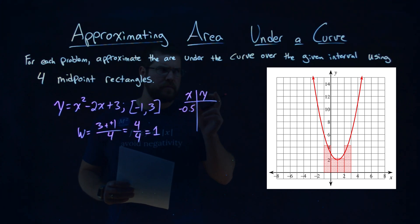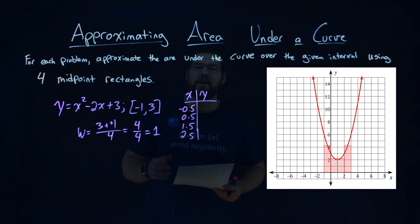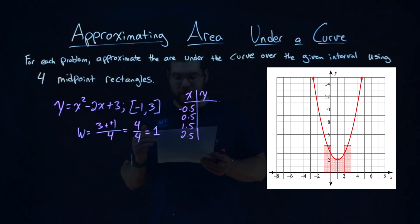Then if the width of each midpoint is at equal distance apart, we add 1 to it. Negative 0.5, add 1 is a 0.5. Add 1 again, we have a 1.5, and one more time is a 2.5. So now we have the x-values of each one of our midpoints here for the rectangles.